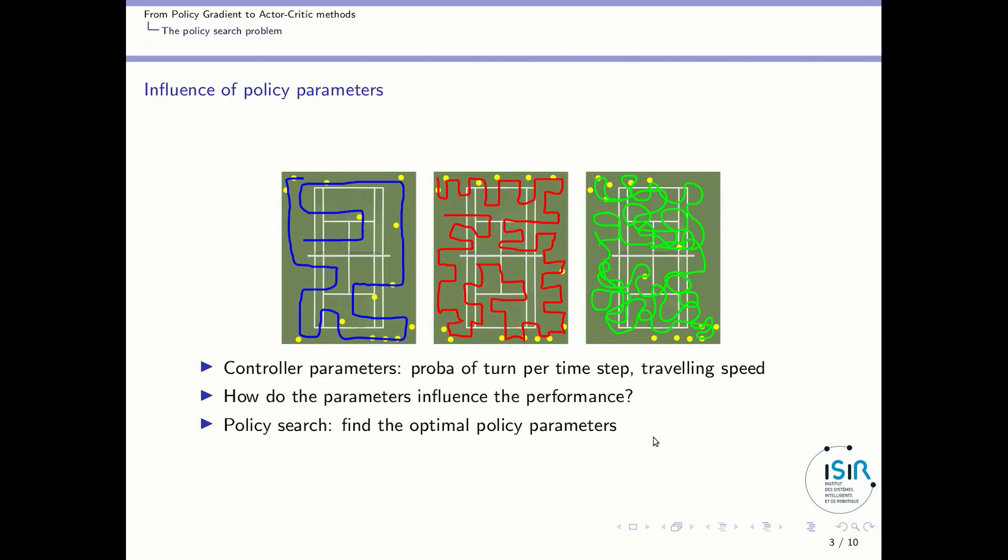So as parameters for our controller let's take the probability of turn per time step and the traveling speed. Here you have one with a low probability of turning and a maybe low traveling speed, and these ones have higher probability of turning and maybe this one a higher traveling speed. The question will be how do the parameters influence the performance? And the problem of policy search will consist in finding the optimal policy parameters so as to maximize the performance.